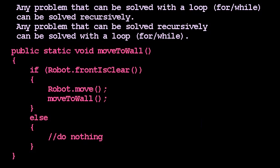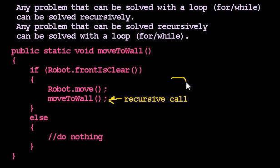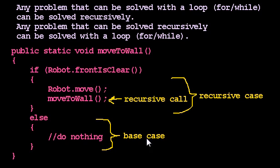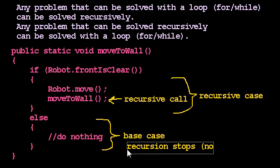Some terminology: every recursive method has a test — it always has an if — because there are always at least two cases. The case where the program makes a recursive call is called the recursive case. And we always have at least one other case: when the front is no longer clear, the method doesn't call itself. That case is called the base case. Often we test for the base case condition first, and the else is the recursive case. What matters is that we have a recursive case with a recursive call, and a base case which does not. The base case is where the recursion stops.